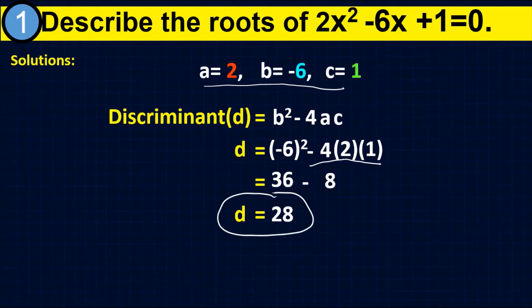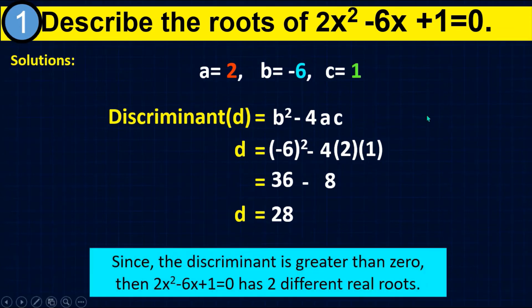The discriminant is positive. Since the discriminant is greater than 0, then 2x squared minus 6x plus 1 equals 0 has two different real roots.